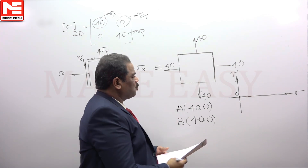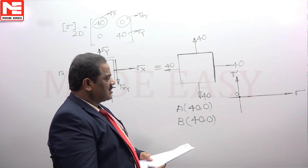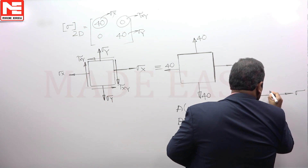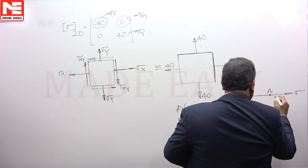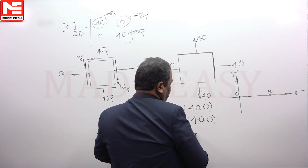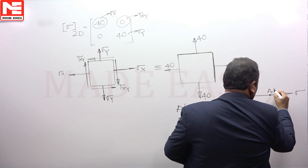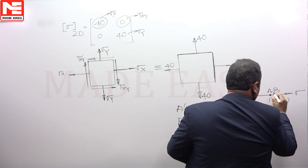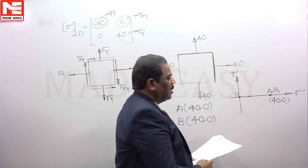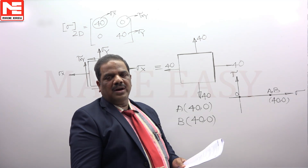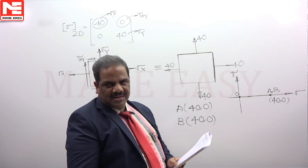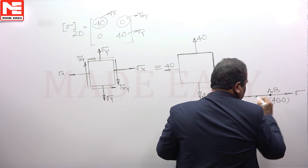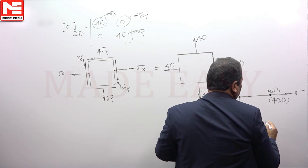Now you have to locate the two points on the x-y system. Point A coordinates and point B coordinates are both the same, so both will coincide at a point. To draw the Mohr circle, you join points A and B and bisect it, but the distance between A and B is 0, so the radius is 0 and the Mohr circle is going to become a point.